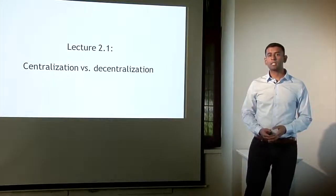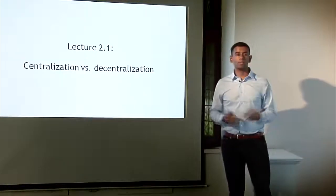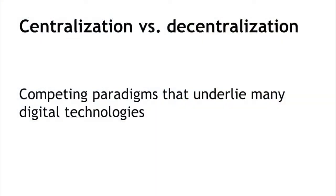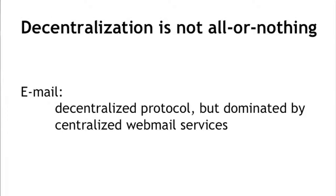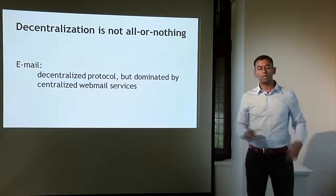Decentralization is an important concept not just for Bitcoin — this notion of competing paradigms of centralization versus decentralization plays out in a variety of different digital technologies. To understand Bitcoin's decentralization, I want to start with the caveat that decentralization almost always is not all or nothing. Almost no system is purely decentralized or purely centralized. A good example is email, which is a decentralized system fundamentally, based on a standards-based protocol, SMTP. But in the last decade, we see a dominance of a few webmail providers, which are sort of centralized service providers. This might be a good model for understanding what might be happening to Bitcoin.